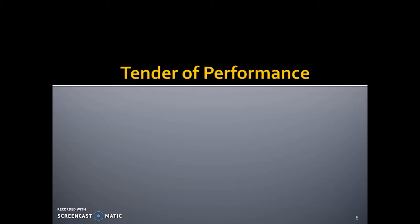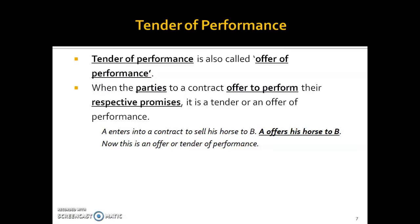Next is tender of performance. Tender of performance is also called offer of performance. It is when the parties to a contract offer to perform their respective promises. For example, A enters into a contract to sell his horse to B. When A brings the horse to B — offering it in person or delivering it to B's house — this is called a tender or offer of performance. Basically, the parties to the contract are signifying their readiness to perform and fulfill their contractual duties.